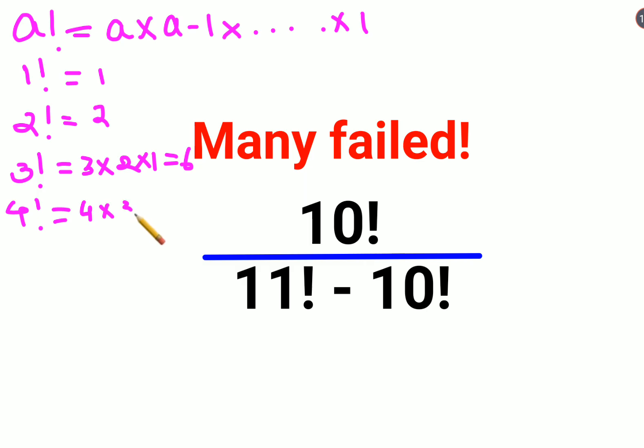And 4 factorial will be 4 into 3 into 2 into 1. Now if you see I can write 4 factorial as nothing but 4 into, see this entire thing is getting repeated, so I can directly write this as 3 factorial. So now from here we have understood that n factorial can be written as n into n minus 1 factorial.